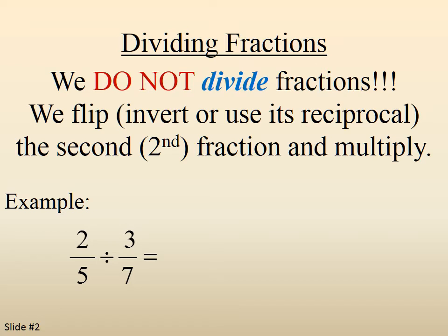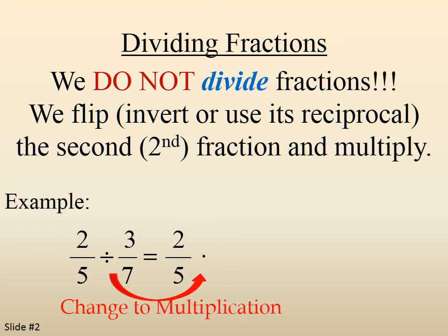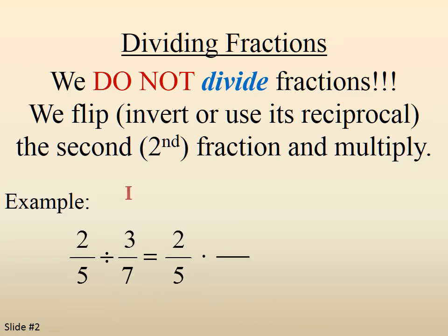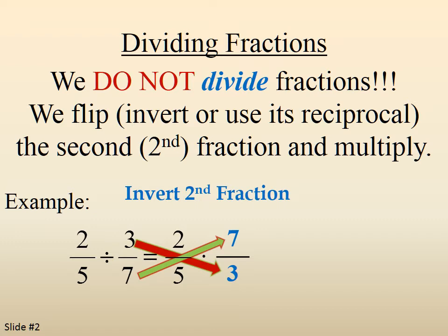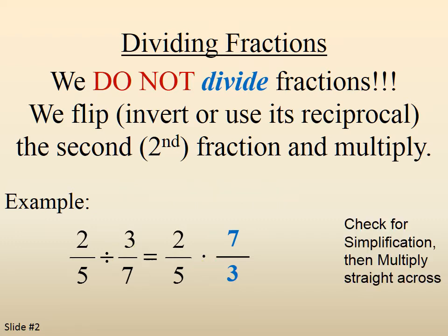Example: two-fifths divided by three-sevenths. Two-fifths is unchanged. We change the division symbol to multiplication. And then we're going to flip, or invert, the second fraction. So the three goes from the top to the bottom, and the seven goes from the bottom to the top. So now it becomes two-fifths times seven-thirds.